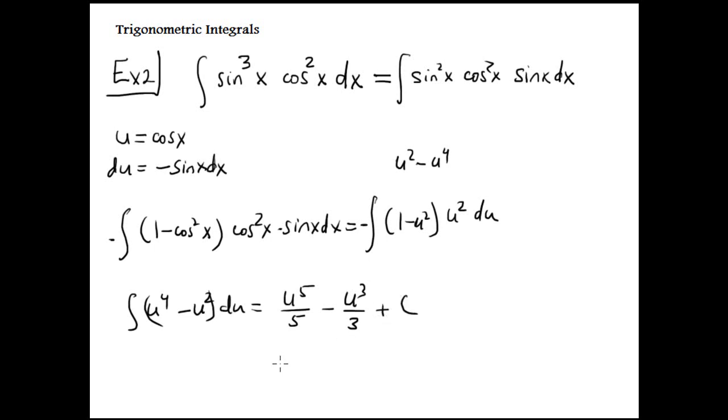expressing using the original variable, is cosine to the 5th power x divided by 5 minus cosine raised to the third power x divided by 3 plus c.